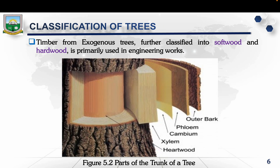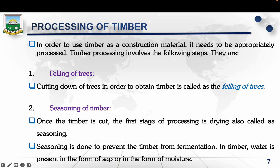Timber from exogenous trees is further classified into softwood and hardwood. Looking at the cross-section of a trunk: the outer bark is the protective layer that is removed during processing. Beneath it is the sapwood — lighter and more active in transporting water and minerals. The heartwood is the solid, denser inner portion more resistant to decay and insects. Softwood is formed from the sapwood region, while hardwood is formed from the heartwood.